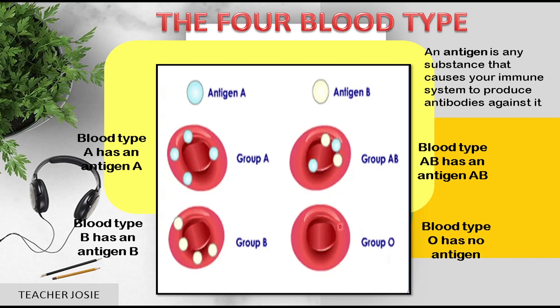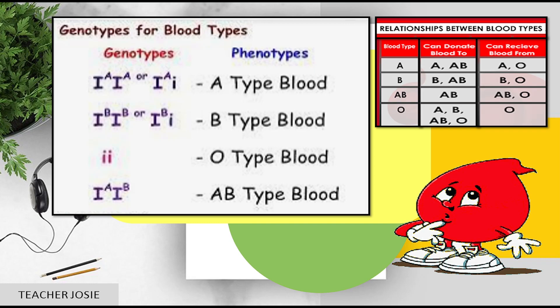The genotype of blood type A is IA IA or IA i. A capital letter I means dominant and small letter i means recessive. Blood type B has a genotype of IB IB or IB i. Blood type O has two small letter i, meaning it is recessive. Blood type AB has a genotype of IA and IB — both are dominant.